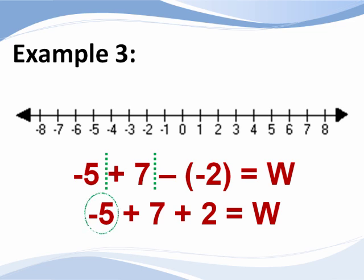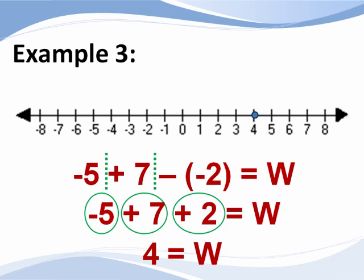We are going to start at negative 5, where you are going to move 7 spaces to the right, and then we are going to move an additional 2 spaces to the right. So what we have is we start at negative 5, move 7 spaces to the right, and then move an additional 2 spaces to the right. Therefore, w is equal to 4.